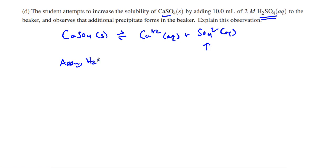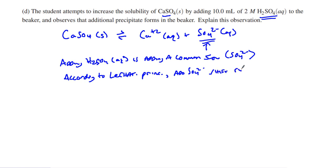So adding that H2SO4 aqueous is adding a common ion, that SO4 minus 2. It's adding a common ion, which according to Le Chatelier's principle, Le Chatelier's principle says if we add this sulfate ion, if we add the sulfate ion, it's going to shift the reaction to the left, producing more calcium sulfate.